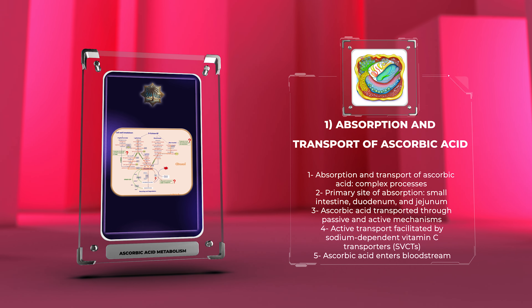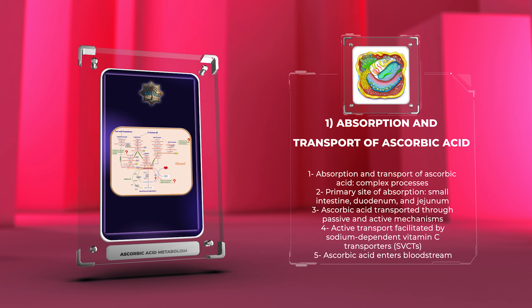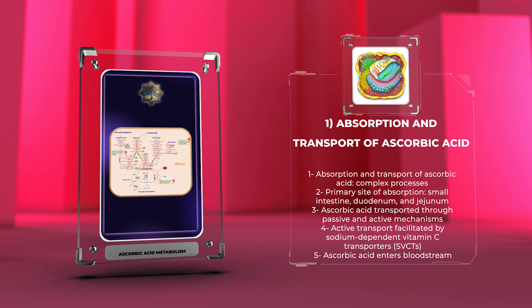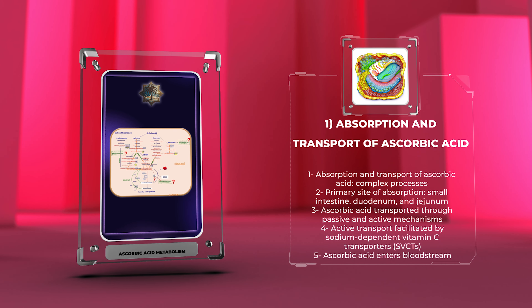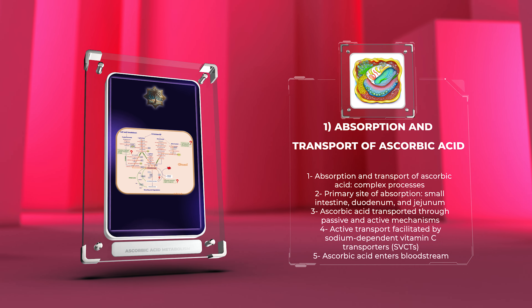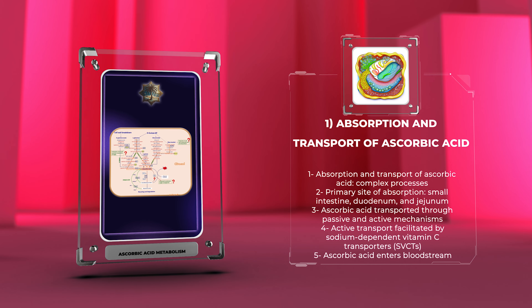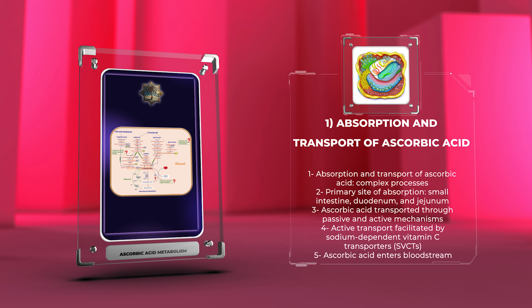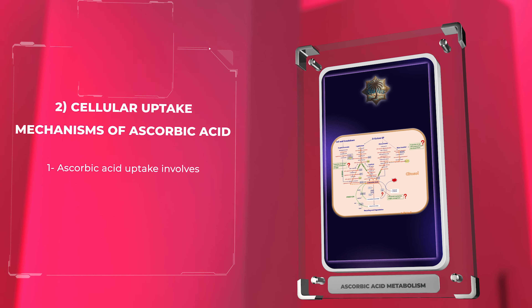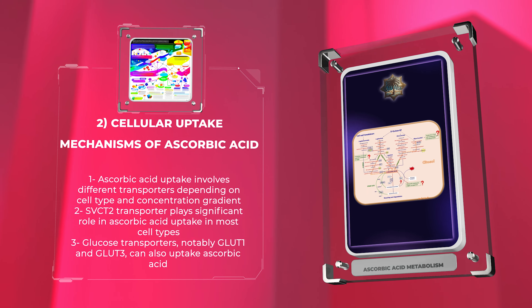Once inside the enterocytes, ascorbic acid can enter the bloodstream through facilitated diffusion via glucose transporters. Plasma ascorbic acid is mostly bound to proteins, particularly albumin, and is transported throughout the body to various tissues where it exerts its functions. Within cells, ascorbic acid uptake involves different transporters depending on the cell type and the concentration gradient.